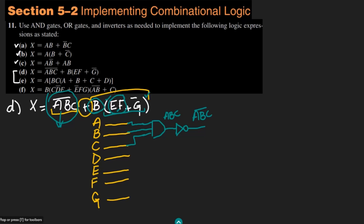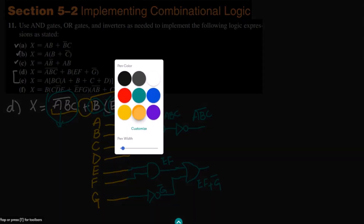e and f are multiplied together using an AND gate. This is e and this is f, and the output of it is e·f. With that, g complement is added. So I use an OR gate with two inputs: one input is e·f, and to the second one, g which is inverted — so I will get g complement. Here I will get e·f plus g complement.